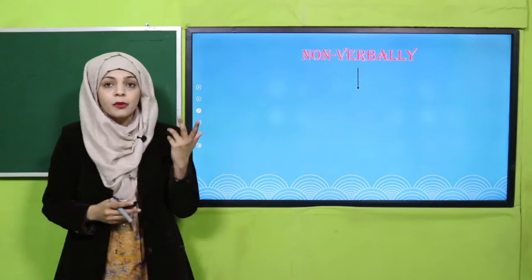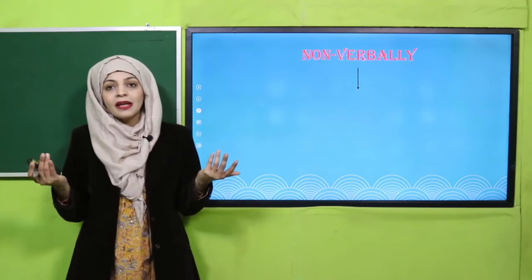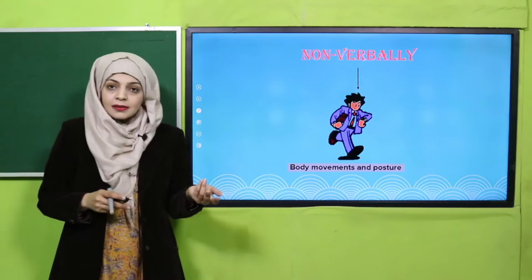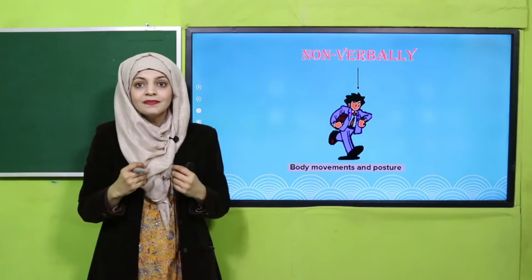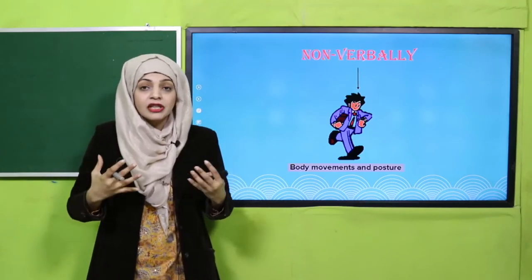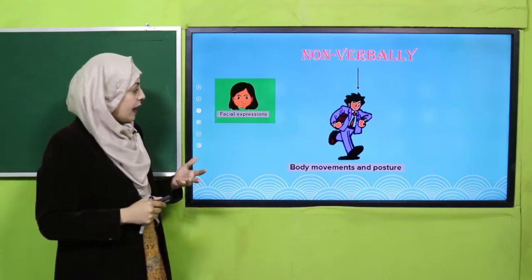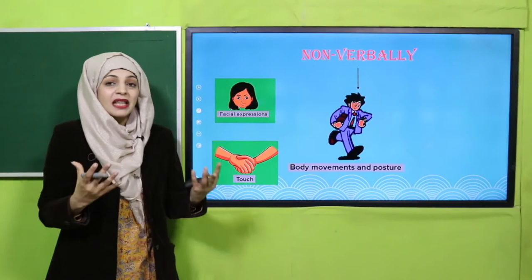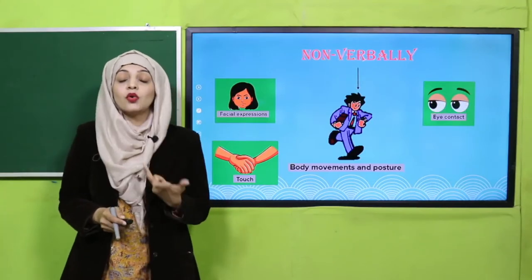Now we move to non-verbal communication, in which words are not used. How does your message reach the other person? Through body movements, different gestures and expressions. A sad or happy expression can communicate your feelings. Facial expressions, touch, and eye contact are all forms of non-verbal communication — you can convey your meaning through your eyes even without speaking.